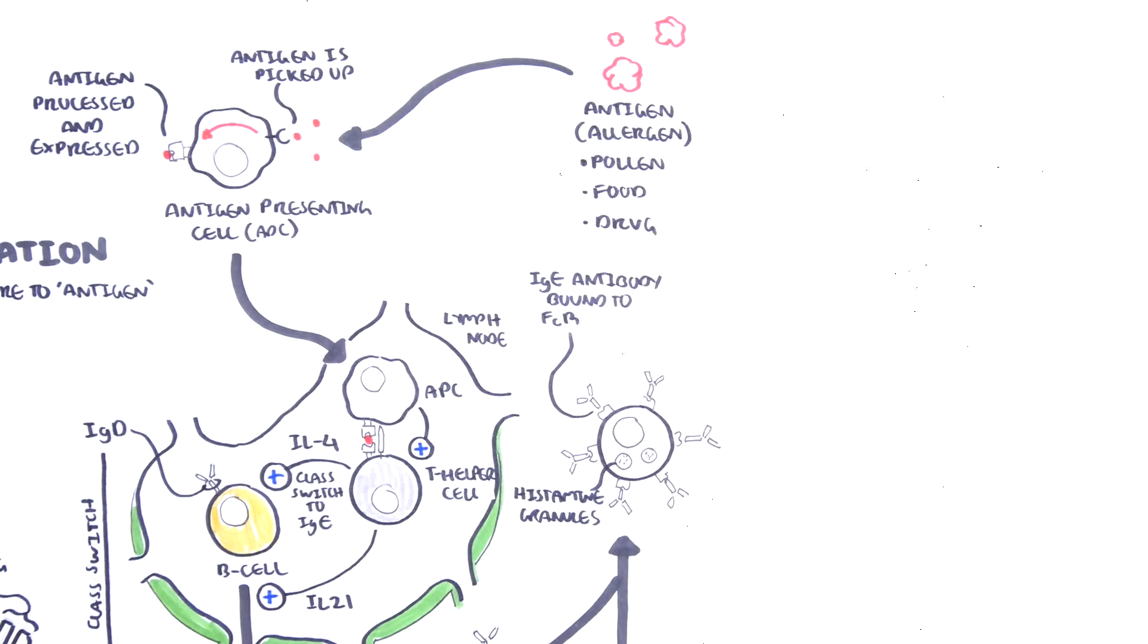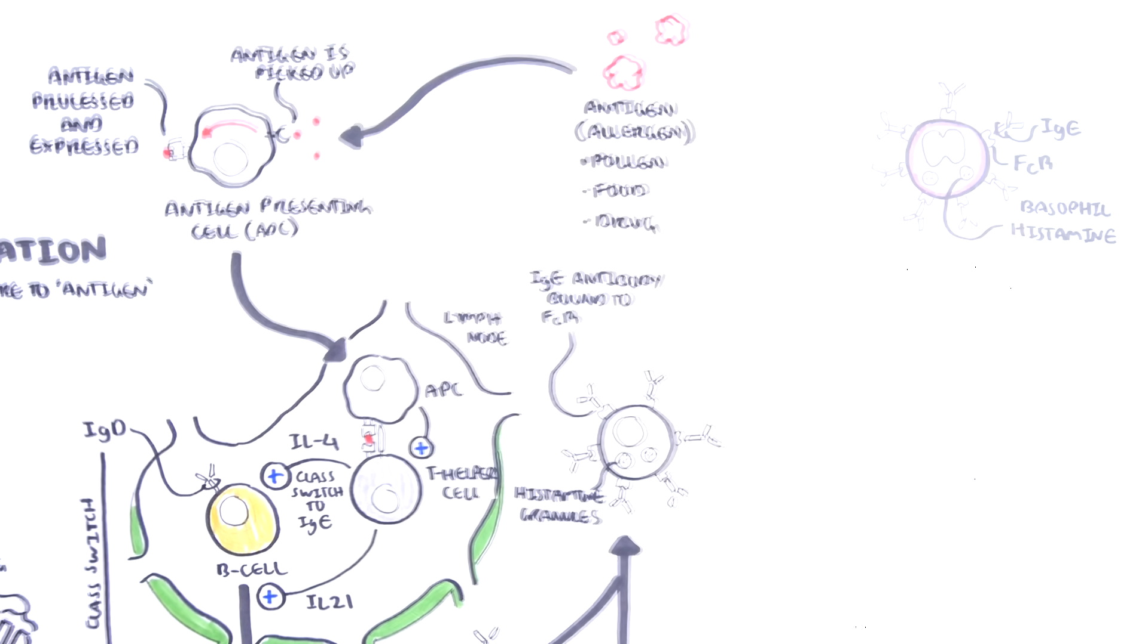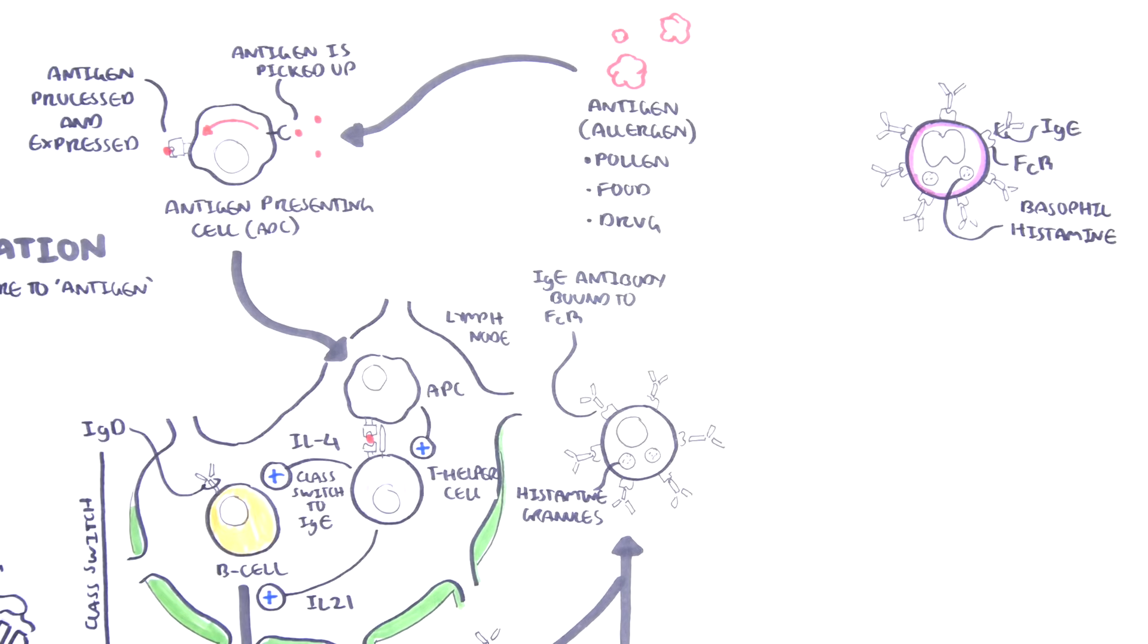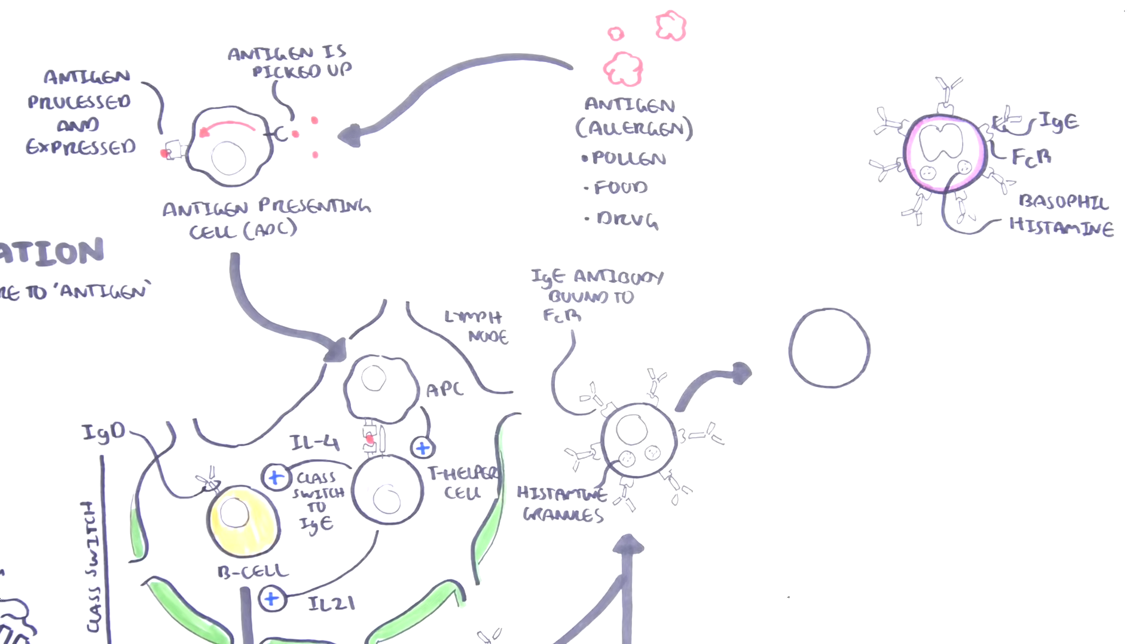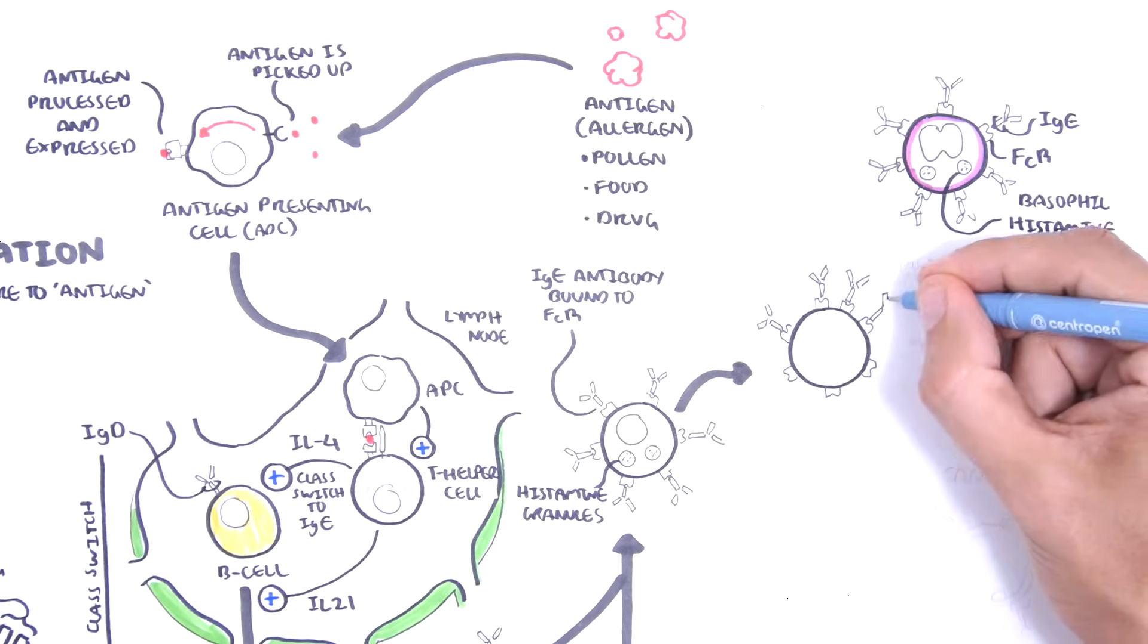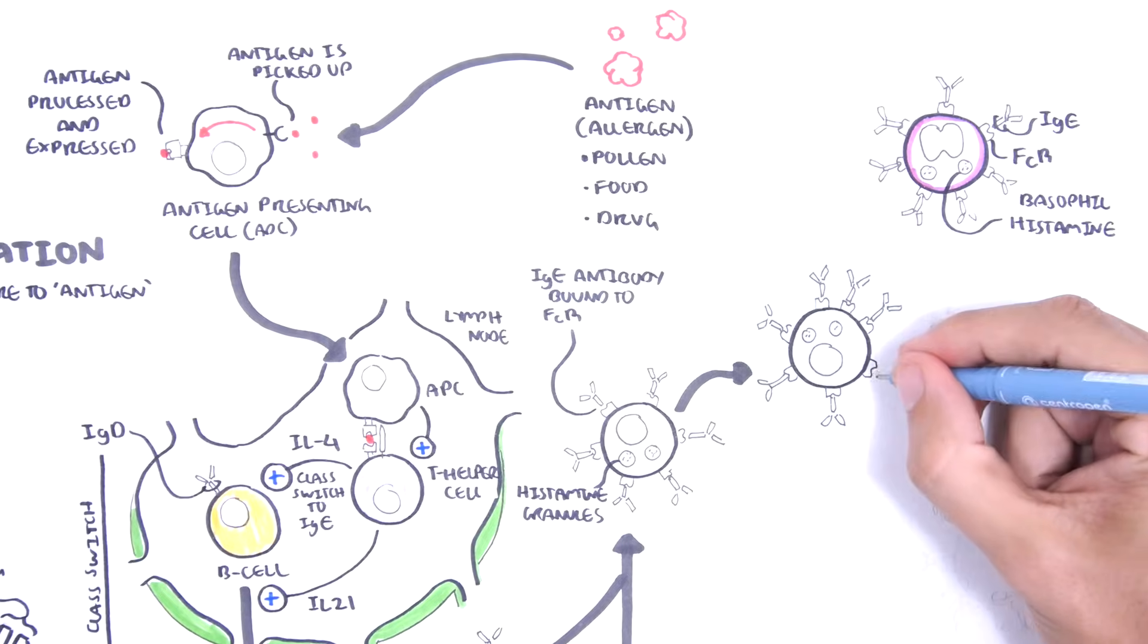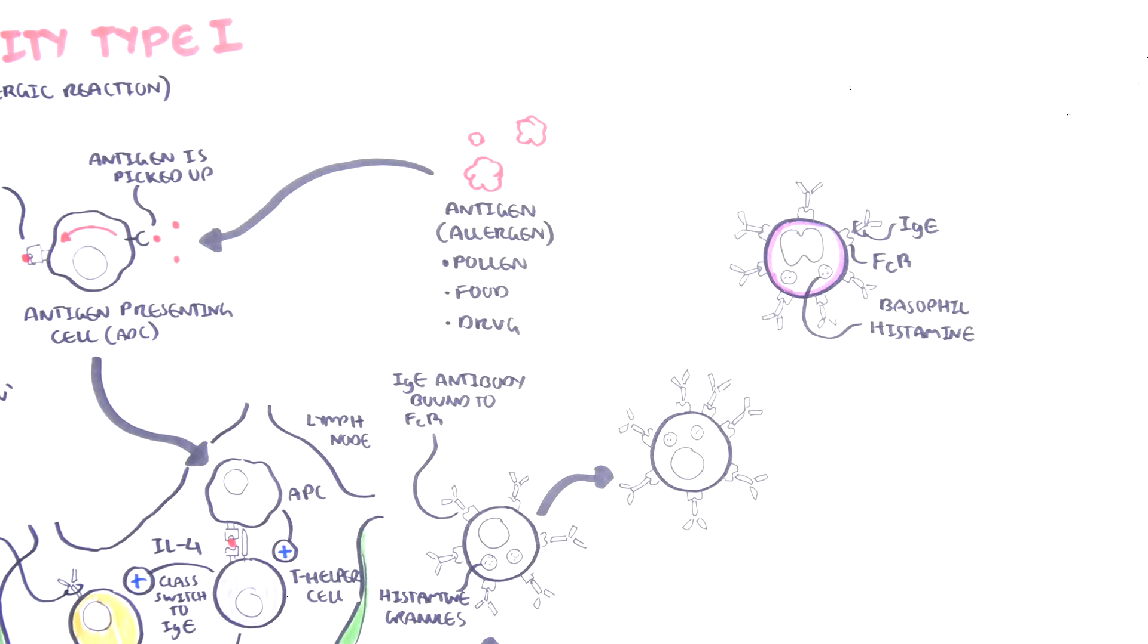The IgE also binds firmly by its heavy chain portion to receptors on the surface of basophils. This completes the priming of the immune system towards that specific allergen. The body is now ready and sensitized towards the particular allergen.